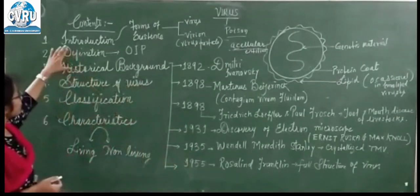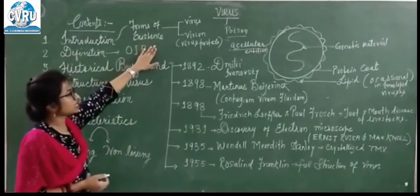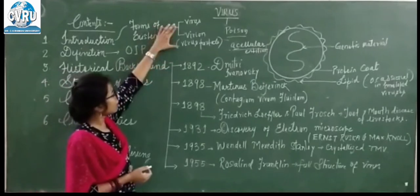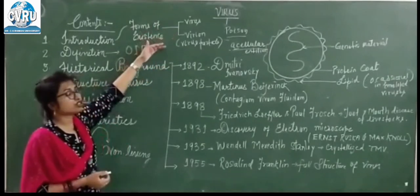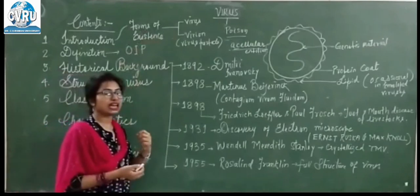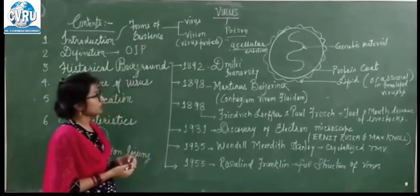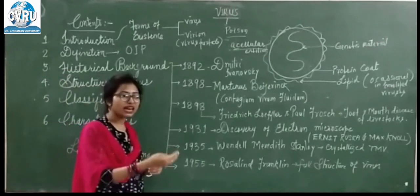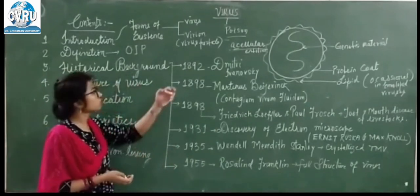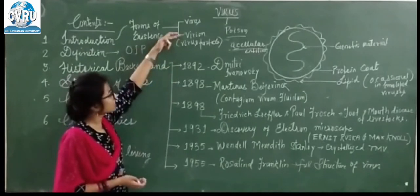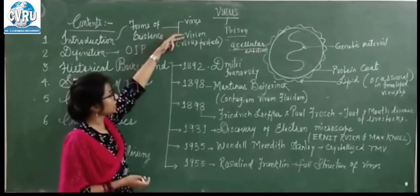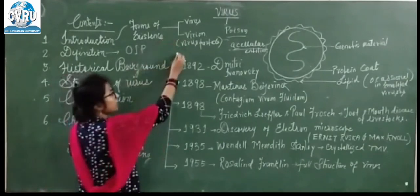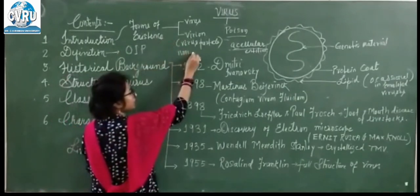Viruses दो form में exist करते हैं. जो virus किसी living organism के अंदर enter करता है, उसको हम virus कहेंगे. लेकिन अगर वो environment में present है, outside any living body, उसको हम virion कहेंगे — virus particle. इस condition में वो एक non-living form में exist करता है.